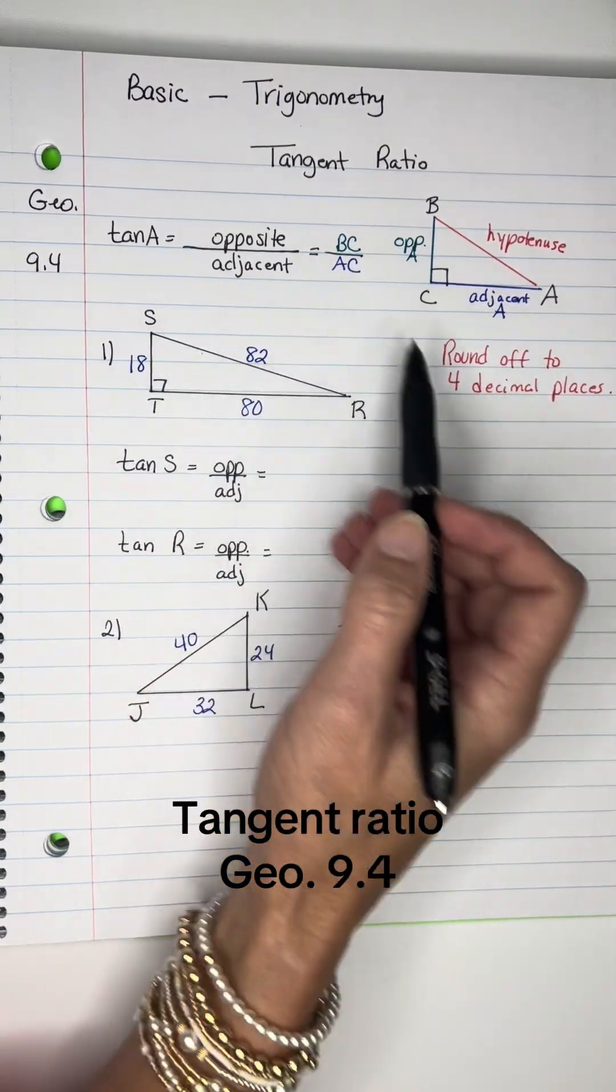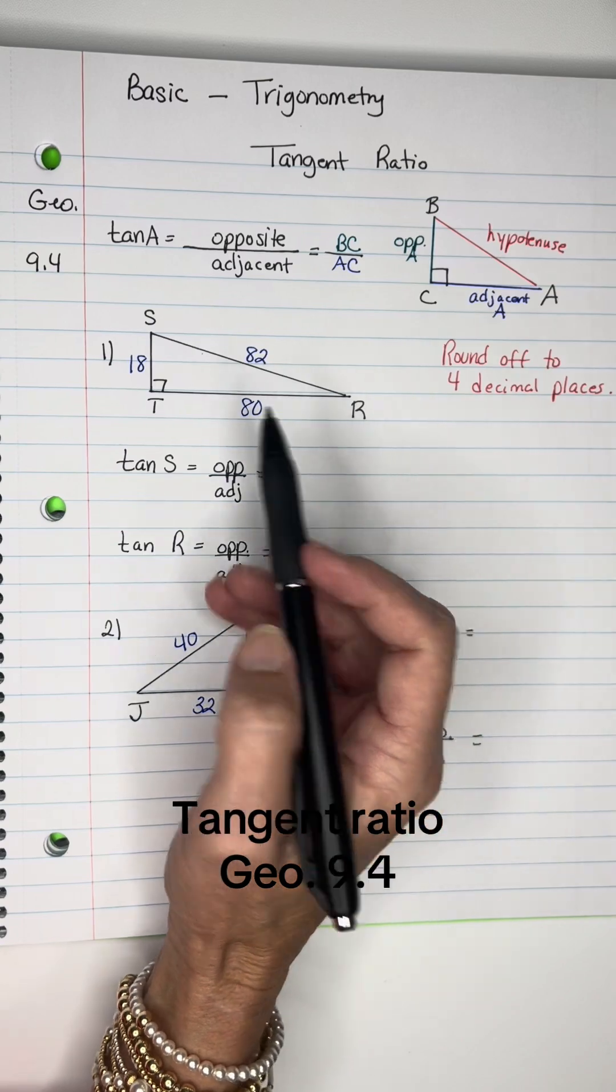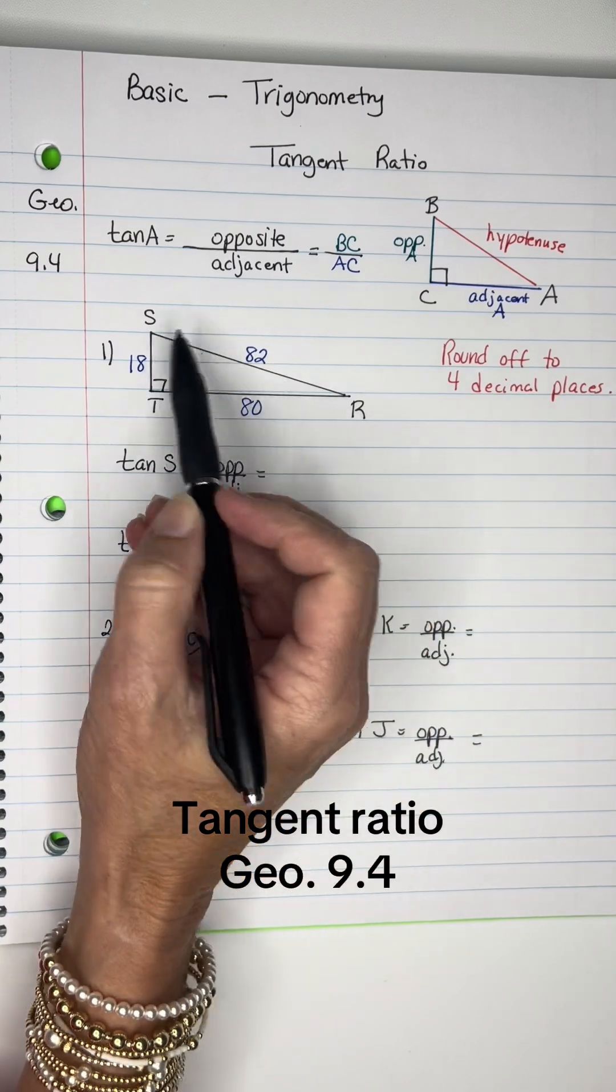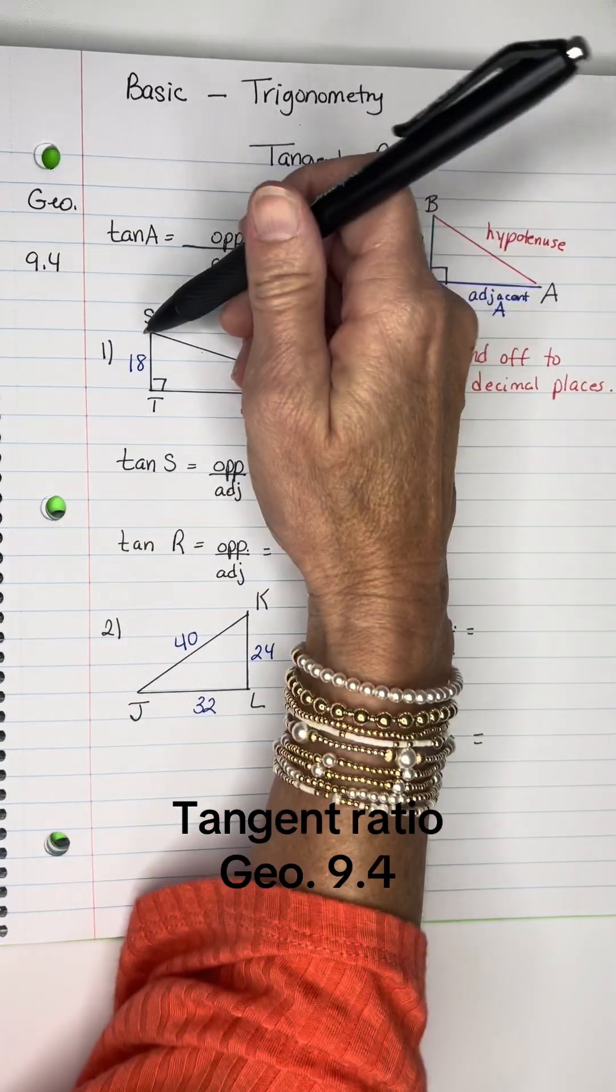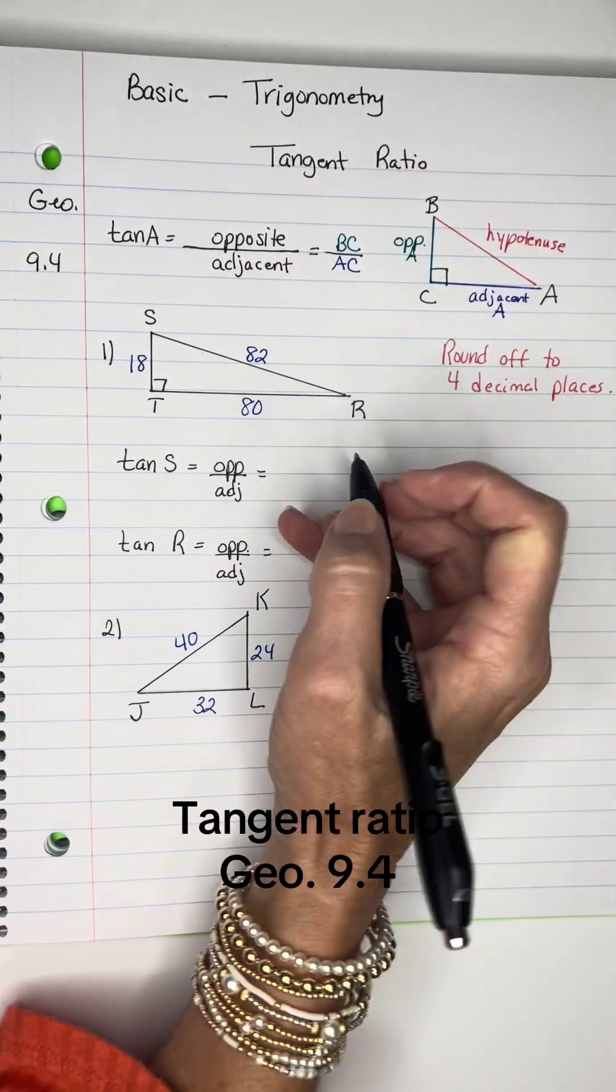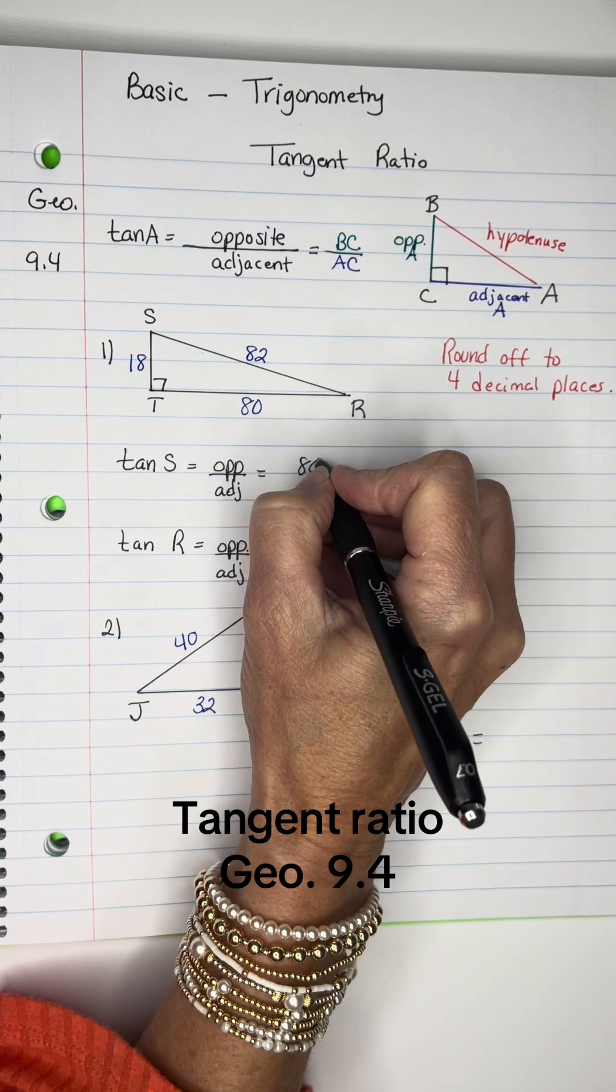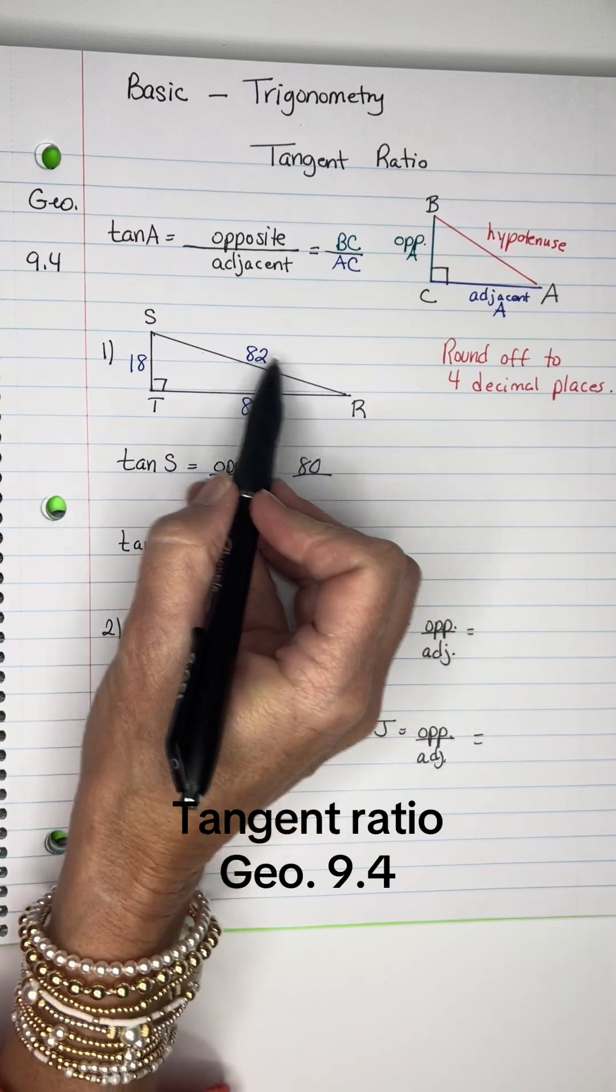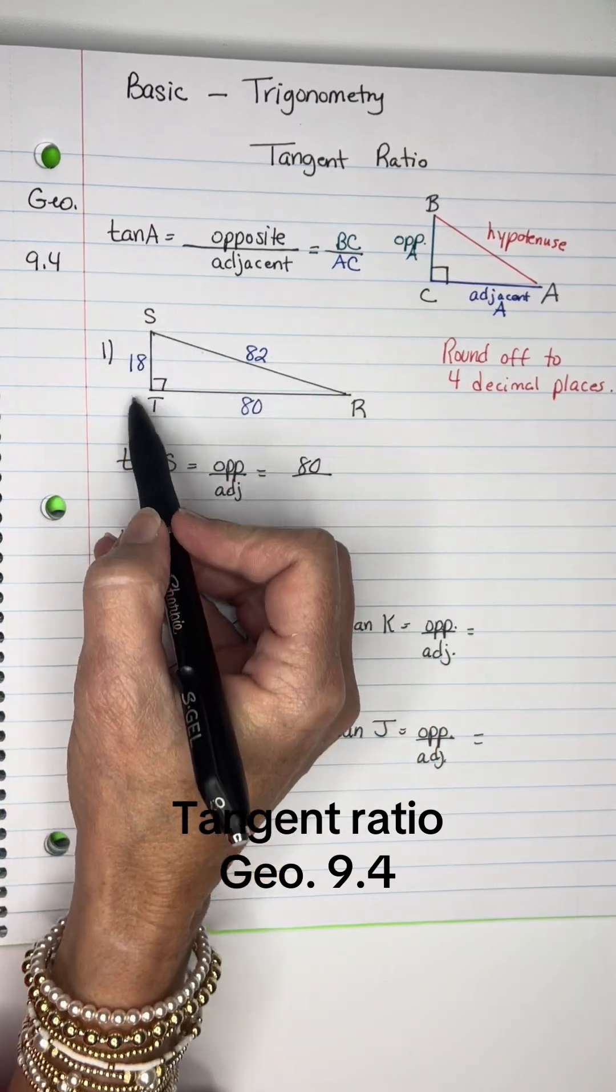For instance, in this right triangle, we need the tangent of S. It's opposite over adjacent. From angle S, going this direction reaches the opposite side, which is 80. The adjacent side—not the hypotenuse, but the other leg—is 18.